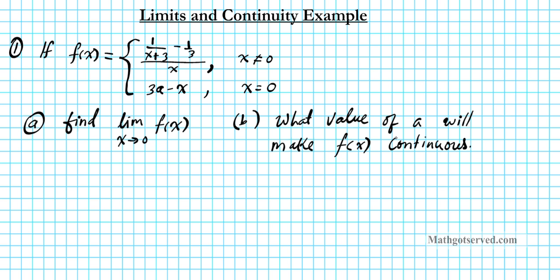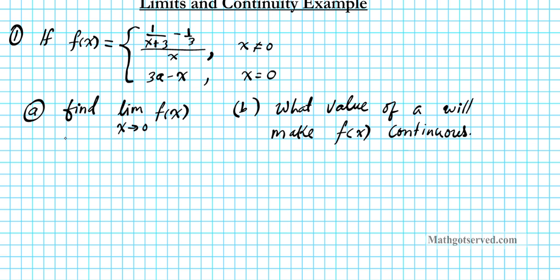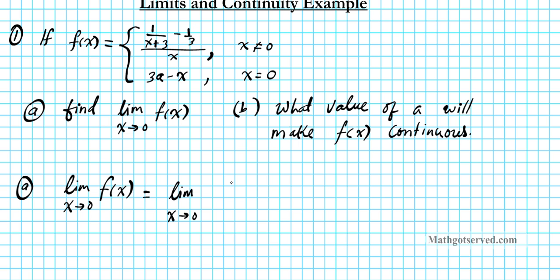Alright, let's start out with part A. We want to find the limit as x approaches 0 of the function. Note we are approaching 0, so the function that excludes 0 is the function we will consider. This other piece comes into play when x is equal to 0, but when x is approaching 0 from both sides, x is not 0. So we are going to be focusing on the upper function: the limit as x approaches 0 of (1 over (x plus 3)) minus (1 over 3), all over x.